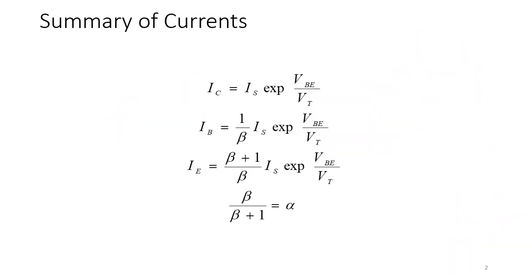To summarize: Ic is given by the exponential equation; the base current Ib is 1/β times Ic; and Ie = (β+1)/β · Ic. Sometimes instead of beta, you're given alpha, defined as α = β/(β+1). Alpha and beta are interchangeable — once you have one, you have the other. Alpha is a number slightly less than 1, for example 100/101 or 50/51. That covers all the transistor currents — see you next week!